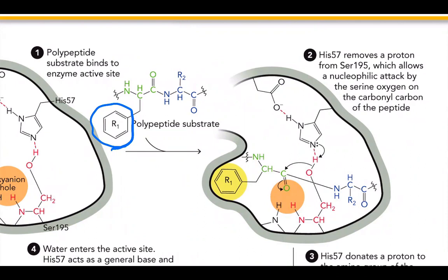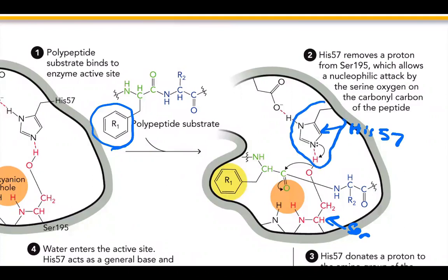Once it fits into the pocket, His-57 is going to remove the proton from serine. So here's serine, and His wants to pick up the hydrogen — now His is going to have the hydrogen. That's going to allow for a nucleophilic attack by the serine oxygen on the carbonyl carbon of the peptide. Because this hydrogen gets pulled up, now this oxygen can go in and attack this carbonyl carbon.